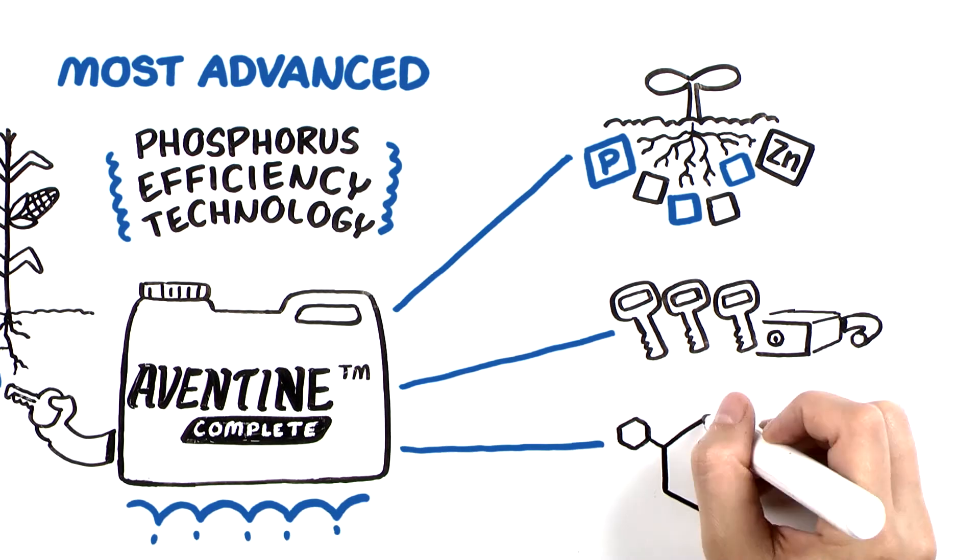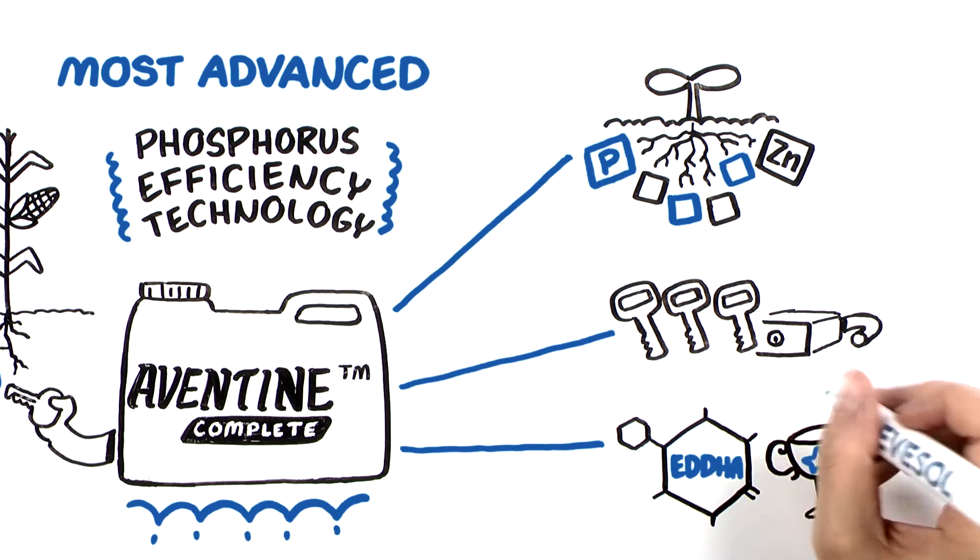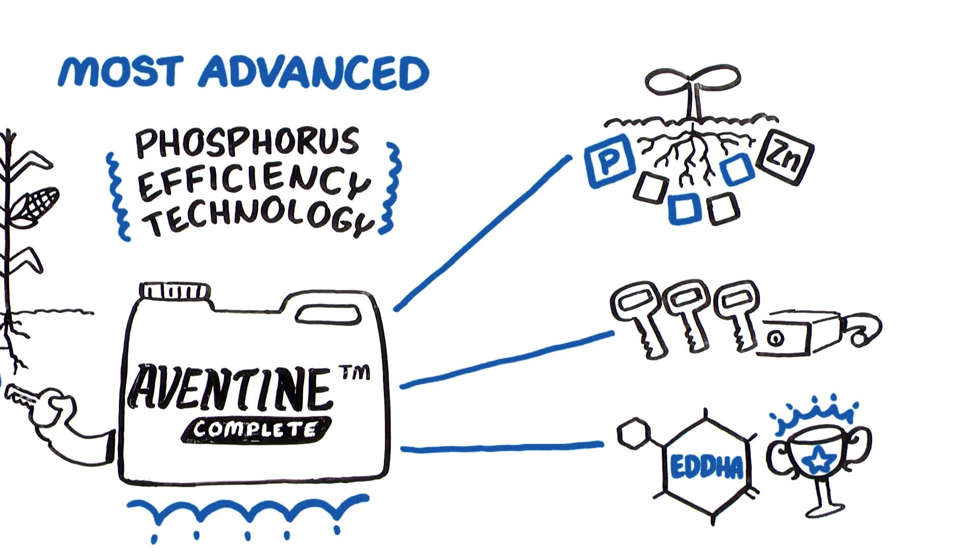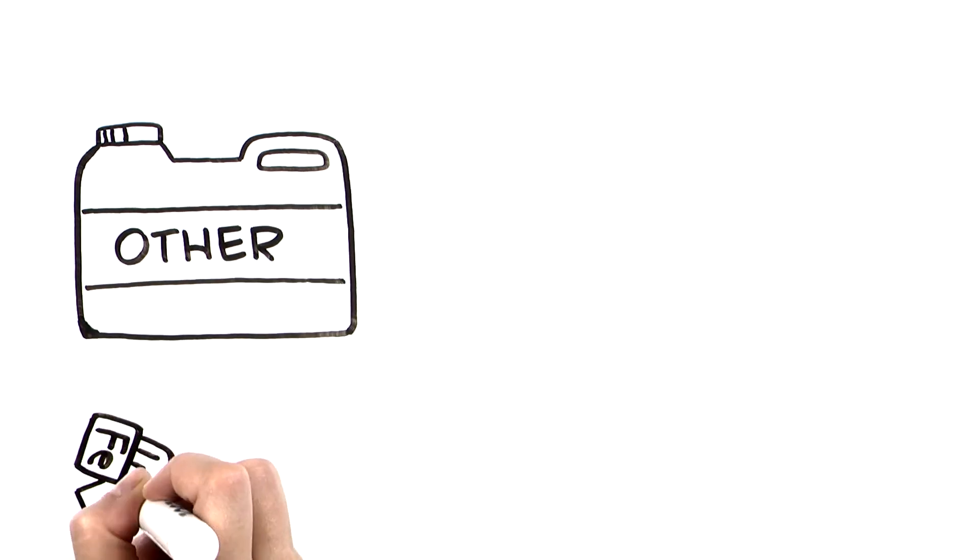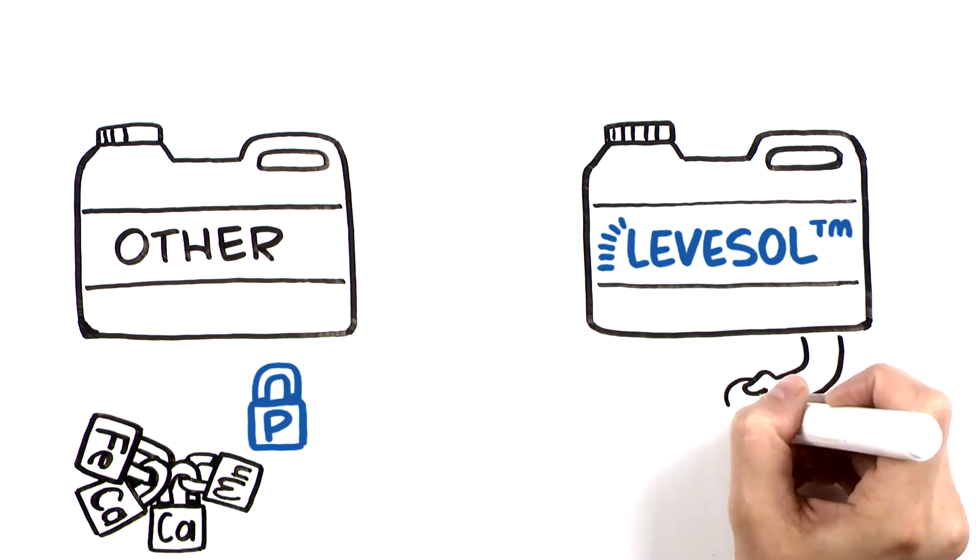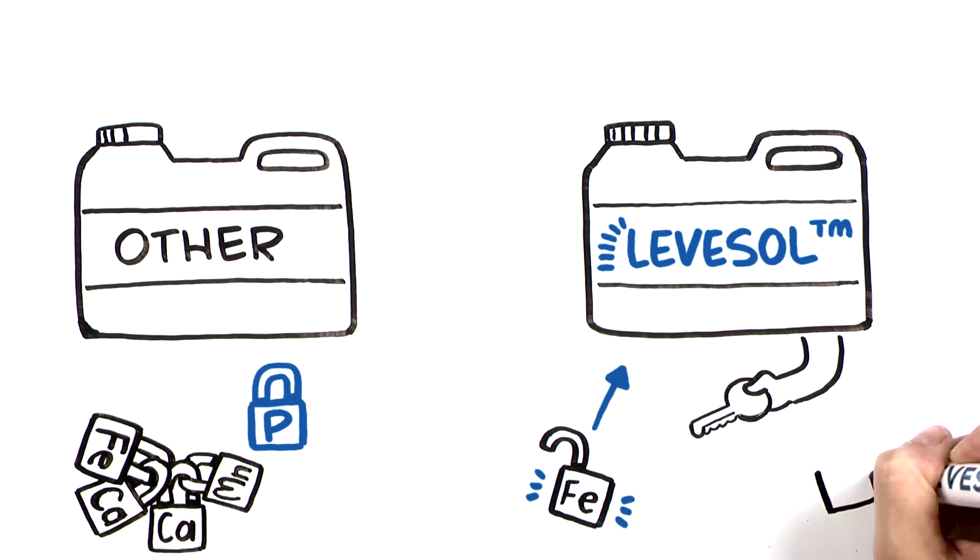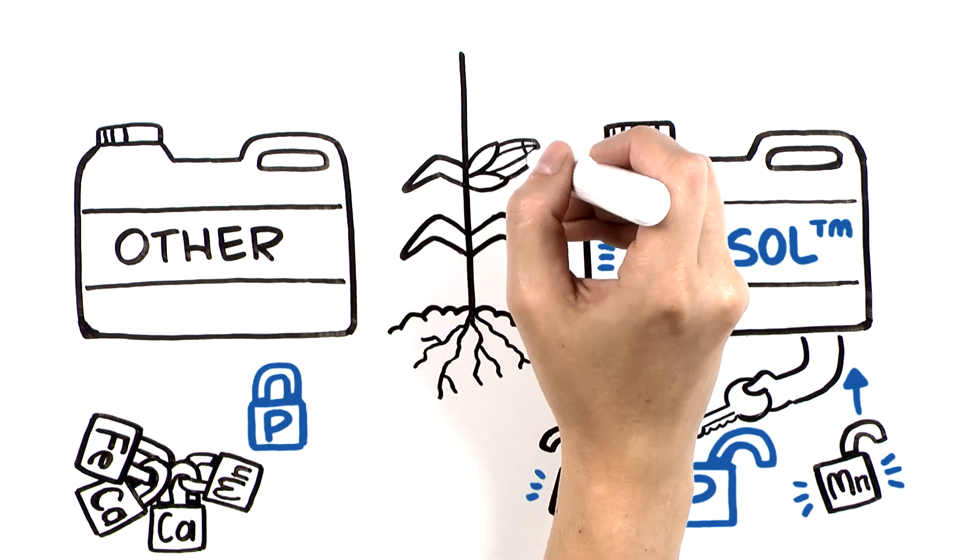Levisol's ortho-ortho EDDHA chelate is the most scientifically proven and only patent-pending chelating agent in the industry. Other phosphorus efficiency products bond with micronutrients to increase phosphorus levels, inefficiently leaving micronutrients such as zinc and manganese tied up. Levisol chelates micronutrients, protecting them from interacting with molecules like phosphorus, allowing both to be more available for plant uptake.